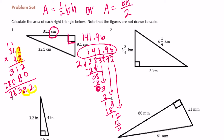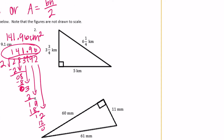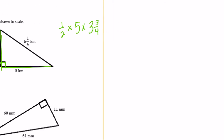Number 2 has fractions. The right angle is formed right here, so here we have the base and the height. I'll do one half times the base times the height. One half times 5 equals 5 halves, which is 2 and a half. Now I have 2 and a half times 3 and three-fourths. I'm going to convert those to improper fractions.